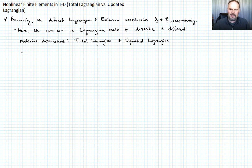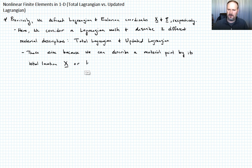Why do these arise? These arise because we can describe a material point either by its initial location, which we would call X, that's the label that we give it, or by its current location, which we'll denote with its Eulerian coordinate C.